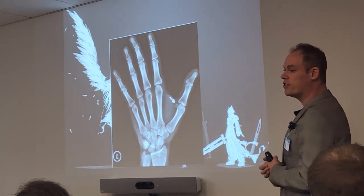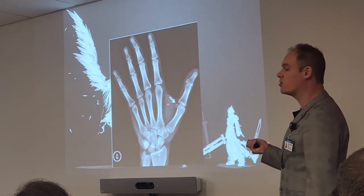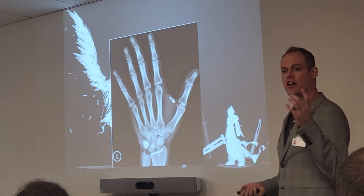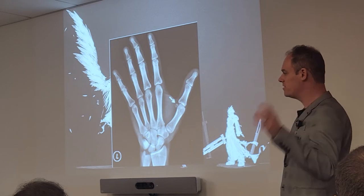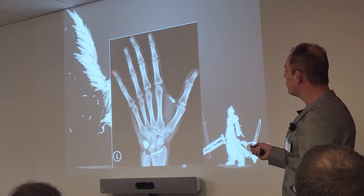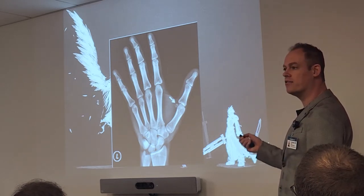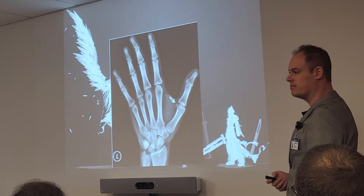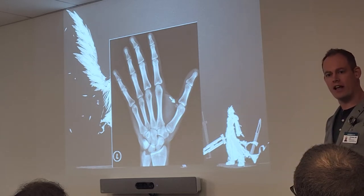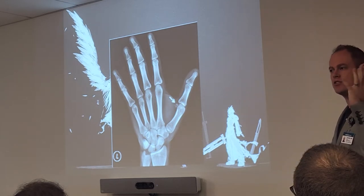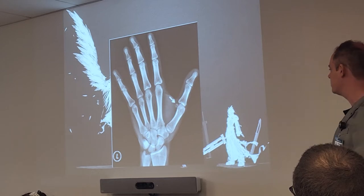There's an example of one on the thumb — that little circular bone. You'll see that one quite commonly since the thumb is used more than our other digits. You'll sometimes see them forming around the joint spaces of the other phalanges, especially in people who do a lot of manual labor with their hands.